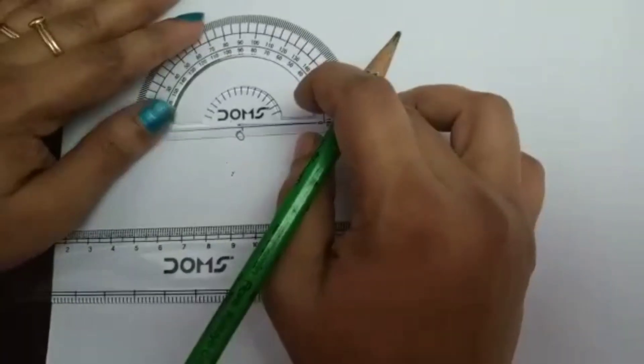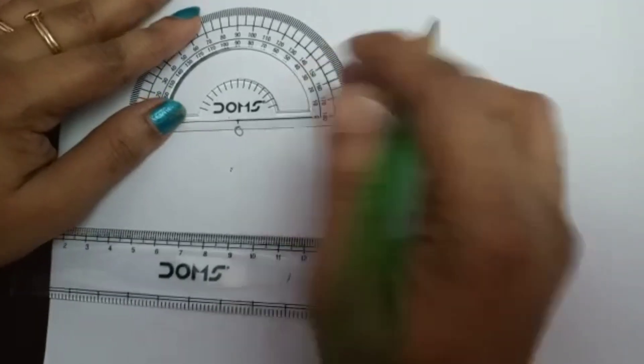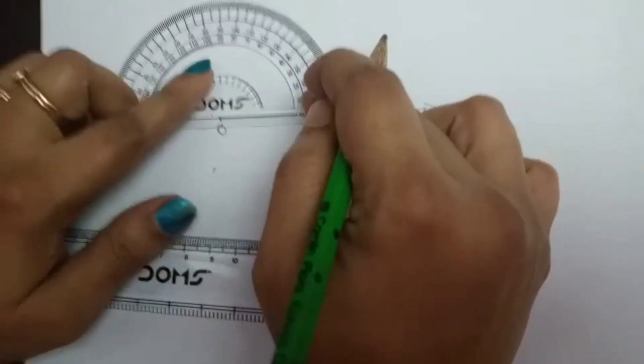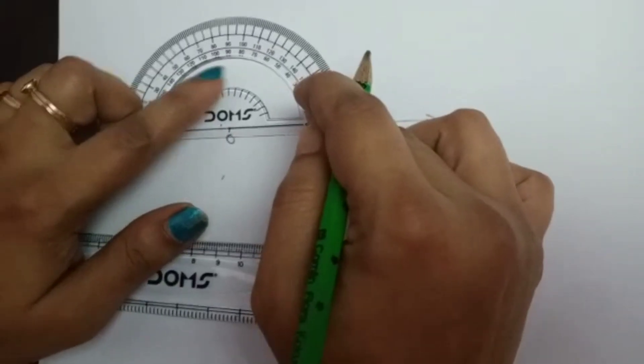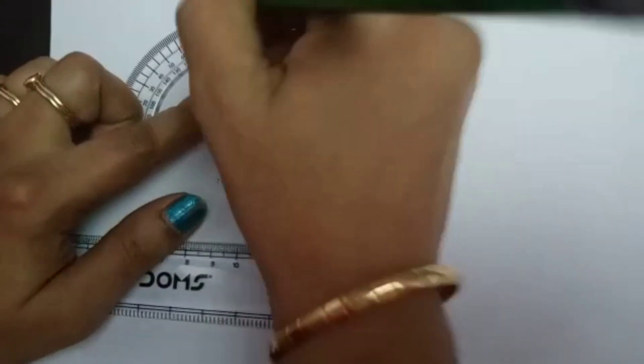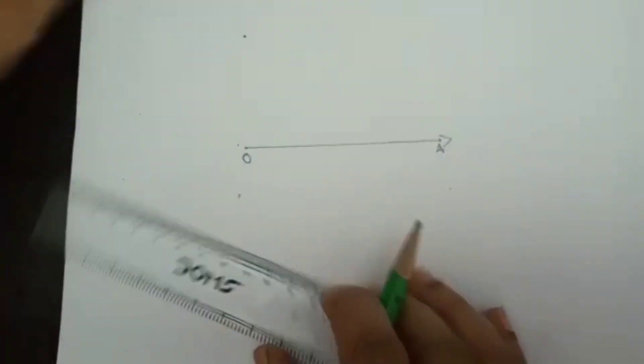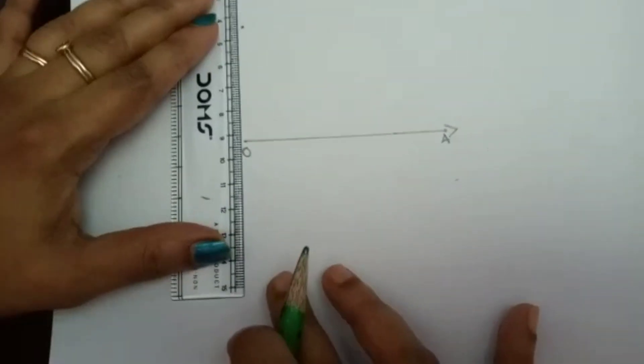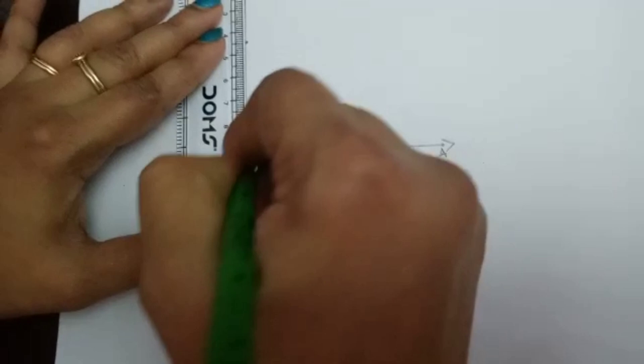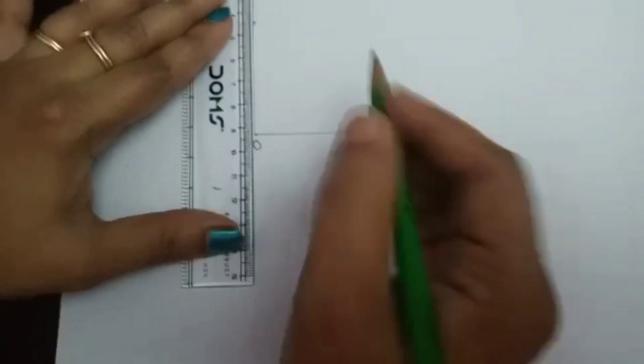My protractor on the point O. Now we have to mark the 90-degree angle point. This is the 90-degree angle, so I'm just connecting that point with O.